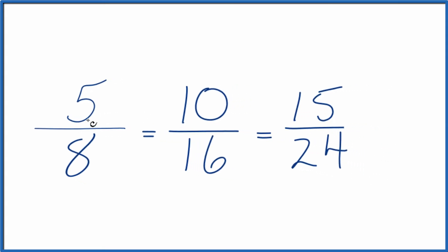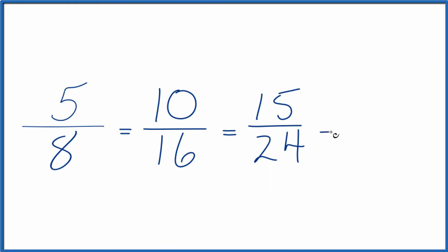Let's do one more. 5 times 4 and 8 times 4. 5 times 4 is 20, 8 times 4, that is 32. These are all equivalent.